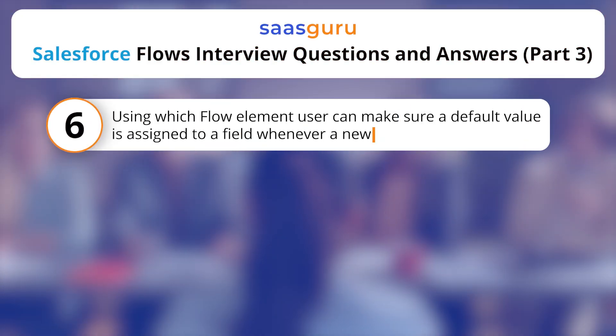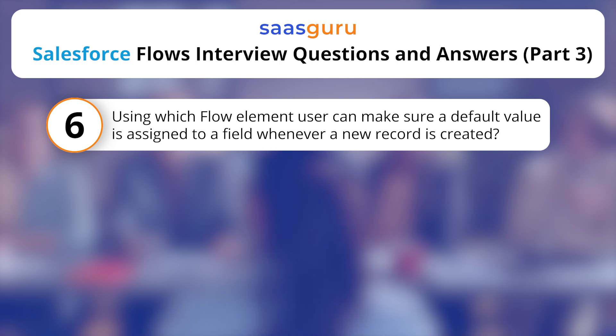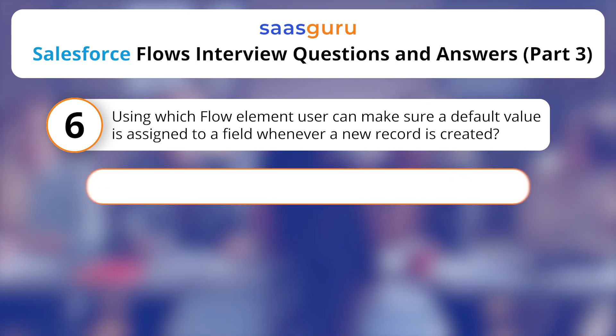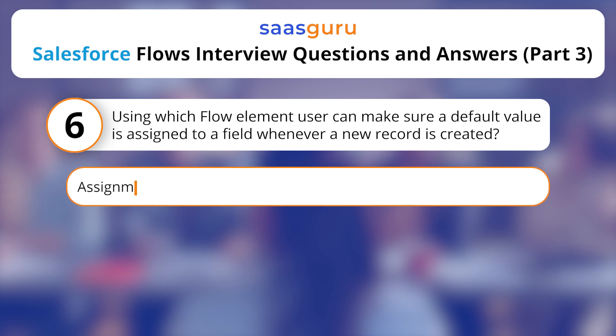Using which Flow element can a user make sure a default value is assigned to a field whenever a new record is created? The answer is the Assignment Element.